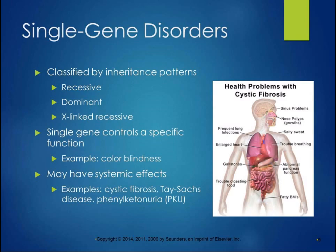Single gene disorders are classified by inheritance patterns. The single gene controls a specific function. They're either recessive — requiring two bad copies to be affected — dominant, where one bad copy causes the disorder — or X-linked recessive, where you need two bad X's or a bad X and a Y to be affected. A non-lethal example is color blindness, controlled by a single gene. Systemic effects occur in disorders like cystic fibrosis, Tay-Sachs disease, and phenylketonuria (PKU).